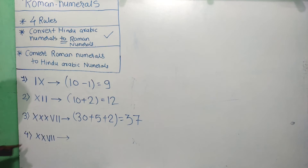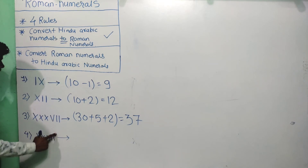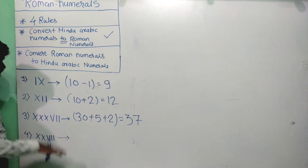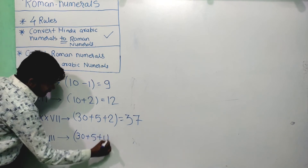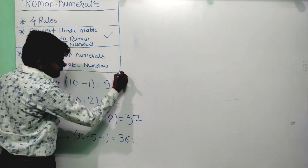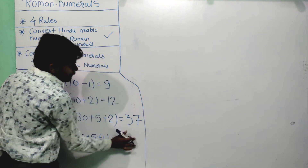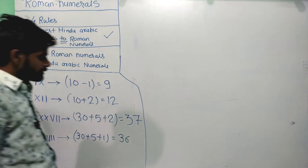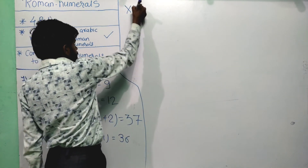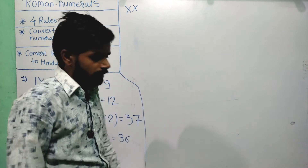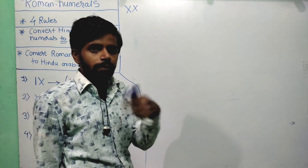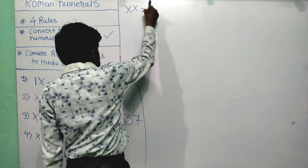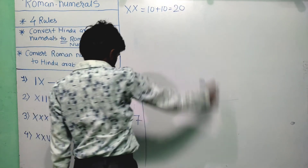For XXXVII: smaller numerals V and II are written to the right of X repeatedly. Add all values: XXX equals 30, V equals 5, II equals 2. Total: 30 plus 5 plus 2 equals 37. For XXXVI: same but only one I, so 30 plus 5 plus 1 equals 36.